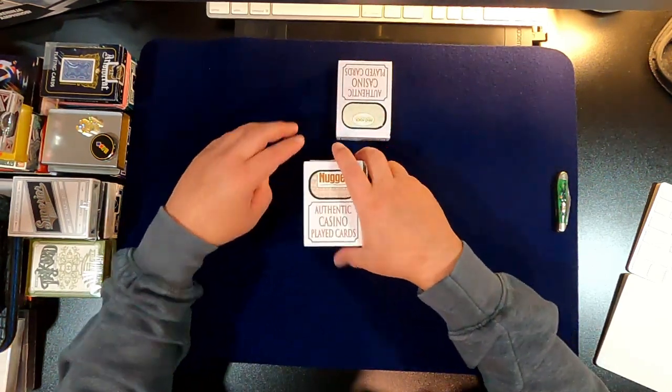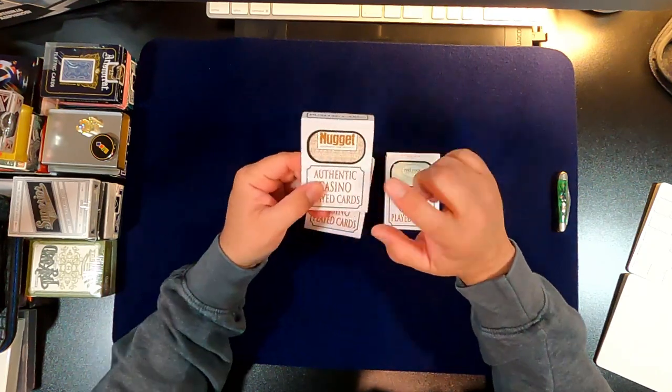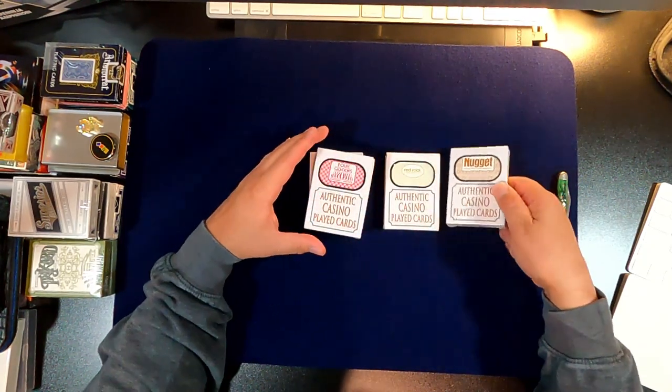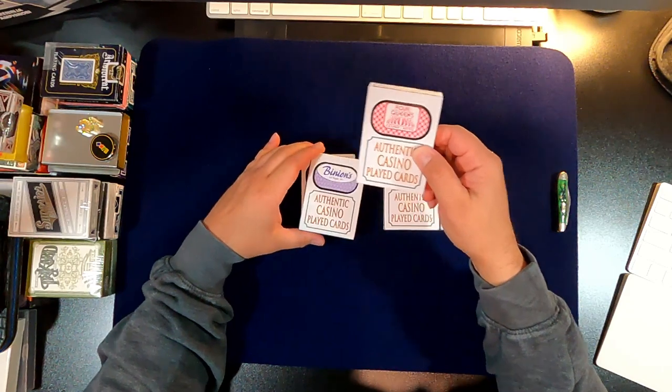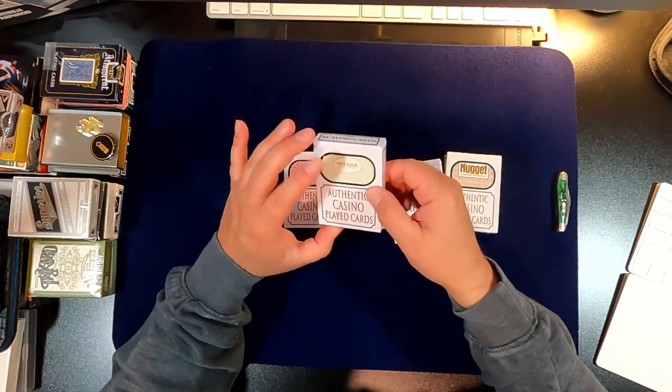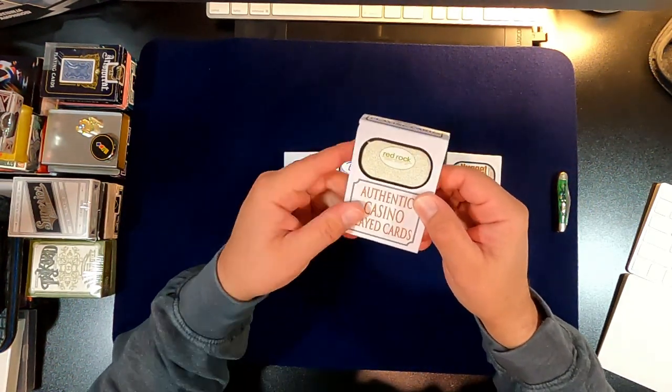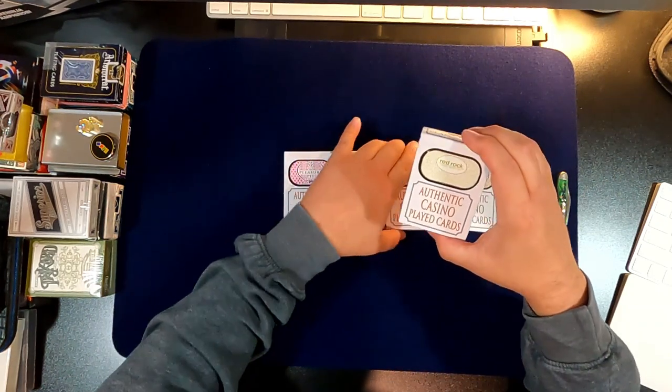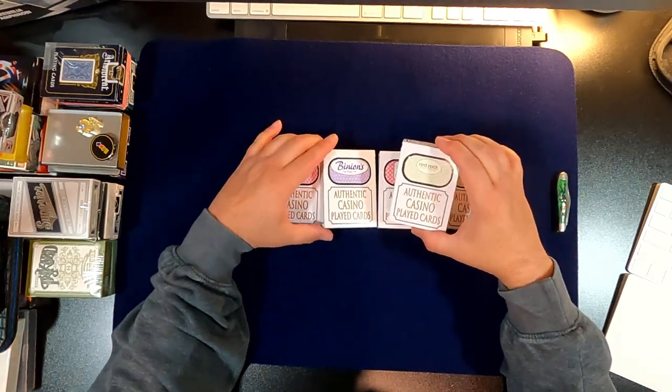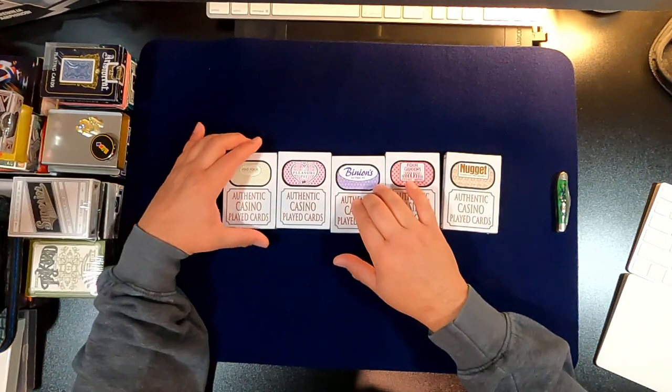They had tons of different casinos. I chose five that I liked. I really like these Nugget ones, these are cool, these were probably my favorite. Four Queens was pretty cool looking. Red Rock has this pattern, it reminds me of this 80s floor. Binion's and the Pleasure Pit, which has a hilariously kitschy back design.